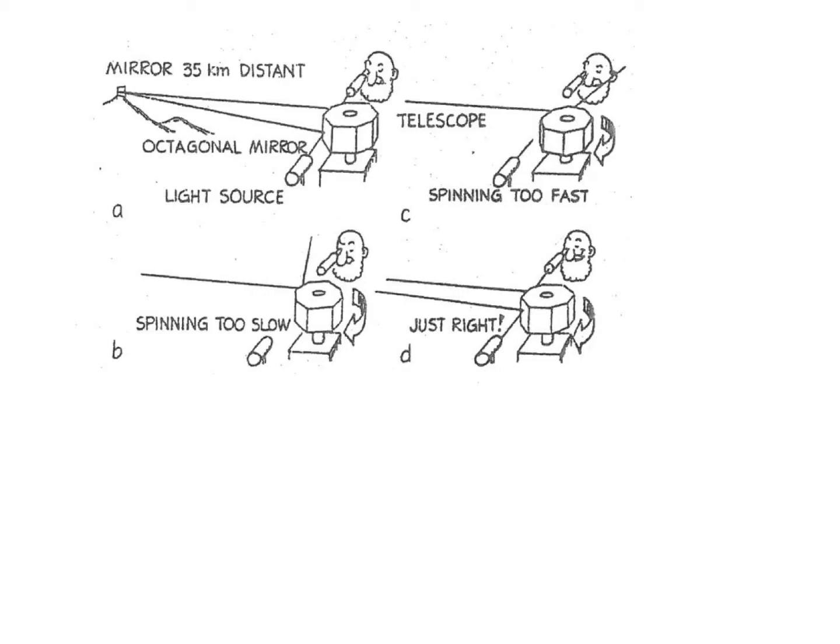So as we discussed in class, if this mirror has eight sides, it needs to spin fast enough such that it can spin one eighth of a turn in the time it takes the light to go down to the mirror on the 35 kilometer distant mountain and back, that's a round trip of 70 kilometers.